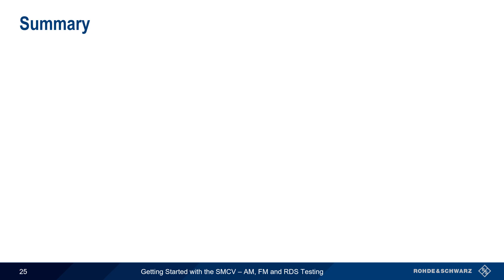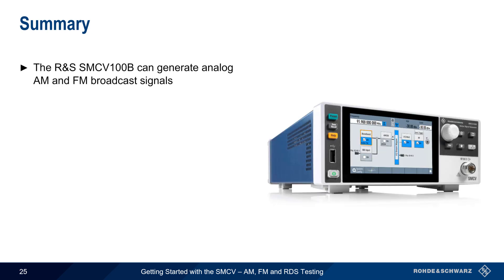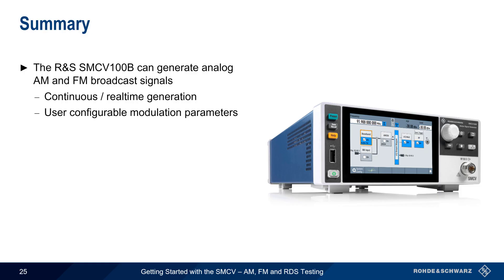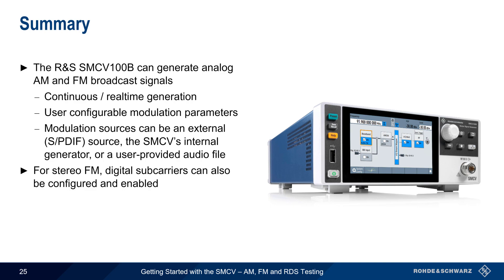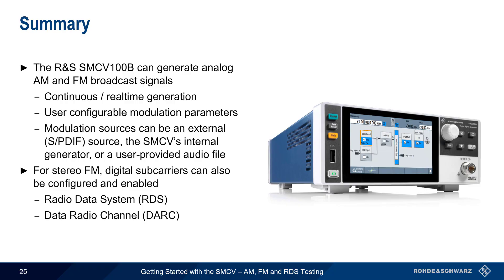In summary, the Rohde & Schwarz SMCV100B vector signal generator can create both analog AM and analog FM broadcast signals, generated continuously in real time with user-configurable modulation parameters. The source of the modulation can be an external signal over a SPDIF connection, the SMCV's internal generator, or a user-provided audio file. In the case of stereo FM signals, user-configurable digital subcarriers can also be inserted, including the very common RDS subcarrier as well as the less common DARC subcarrier.